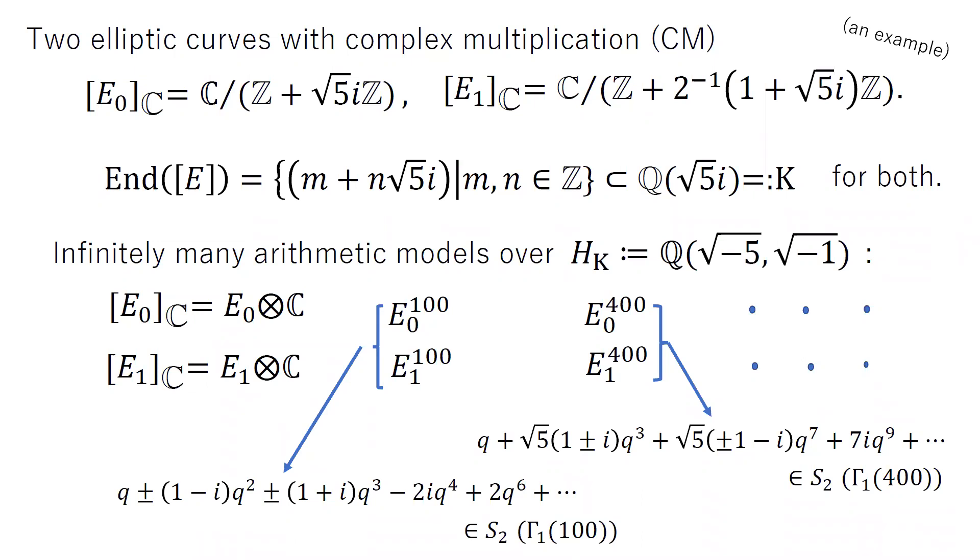And then even for a given complex analytic manifold elliptic curve like this, we begin to see actually infinitely many models in algebraic varieties defined over number fields like this. And in the context of Langland's correspondence, for those elliptic curves, different kinds of weight two modular forms are assigned in those ways.